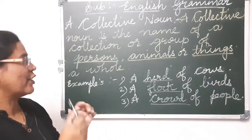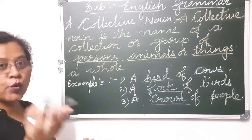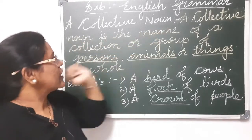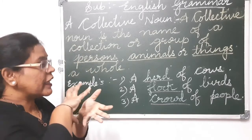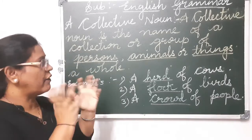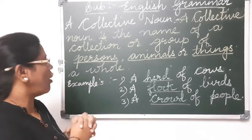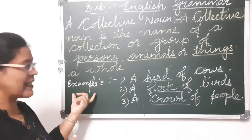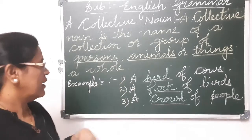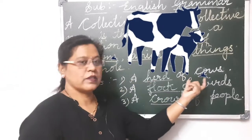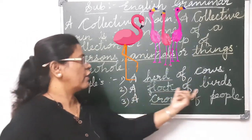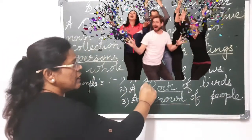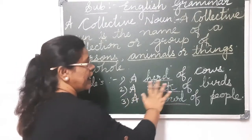So a collective noun is a noun that denotes the names of a collection — a group of persons, animals, or things as a whole. Now examples are given: a herd of cows, a flock of birds, a crowd of people. The words written in green color and underlined in pink are the collective nouns.